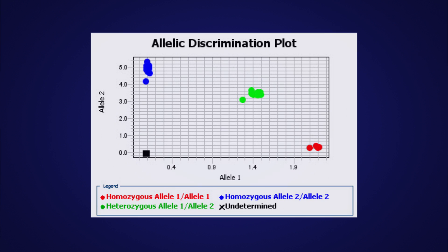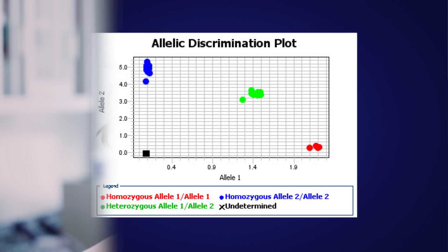When viewed across an entire plate of samples, the data will typically resolve into three discrete clusters, assuming enough samples were used to display a normal distribution given the minor allele frequency for your SNP. Note that there are times in which you would not expect to see three clusters, such as when the gene is on the X chromosome, if a copy number variation is involved, or if the minor allele frequency is extremely low.